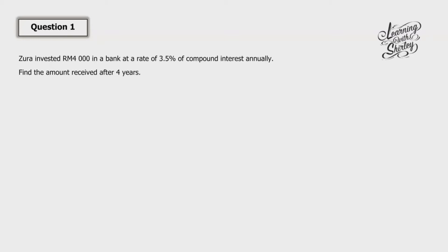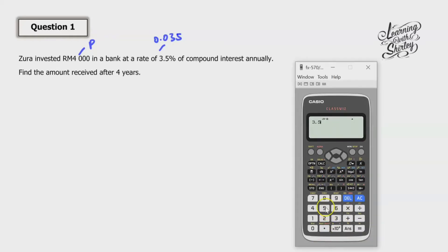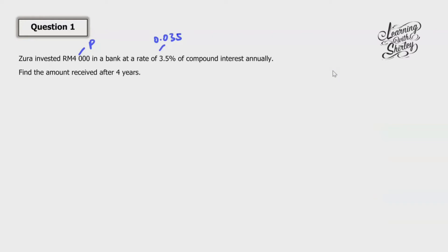For question one, P is the principal which is 4000, and the interest rate is 3.5%, which is 0.035 — calculated as 3.5 divided by 100. Compound interest annually means N equals 1. Find the amount received after 4 years means T equals 4.